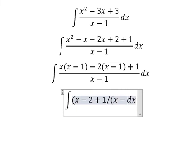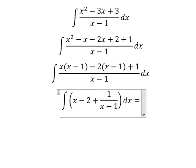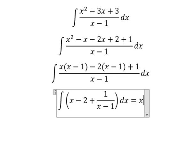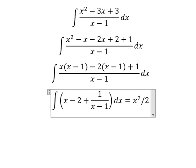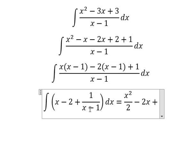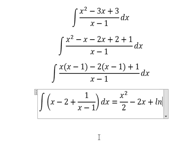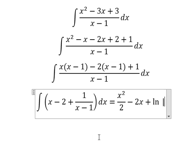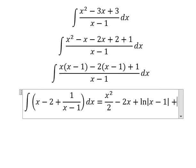2 plus 1/(x - 1). The integration of x gives us x²/2, the integration of -2 gives us -2x, and the integration of 1/(x - 1) gives us ln|x - 1|.